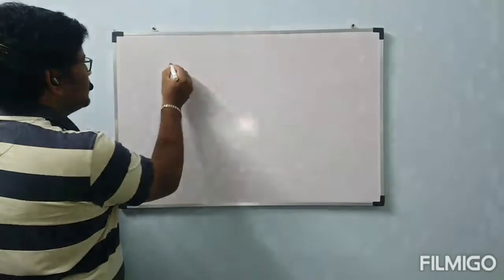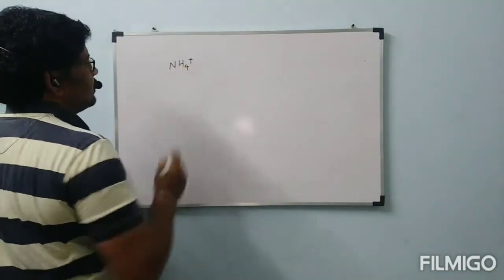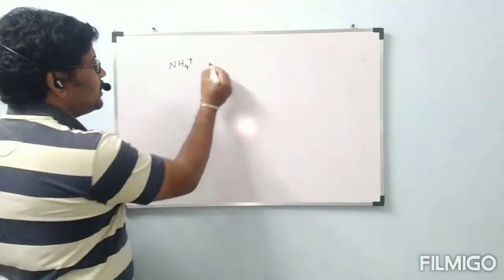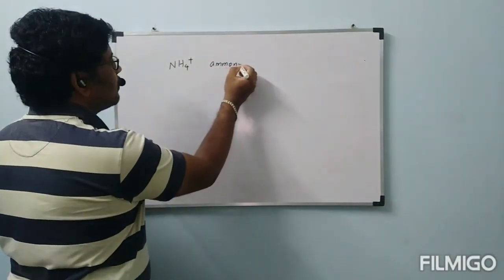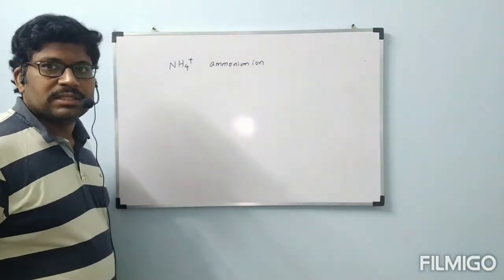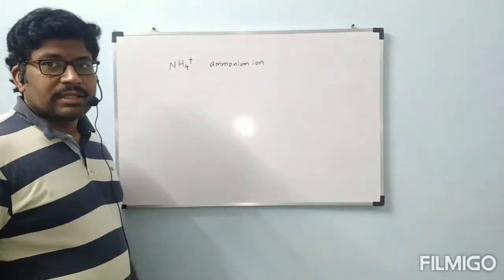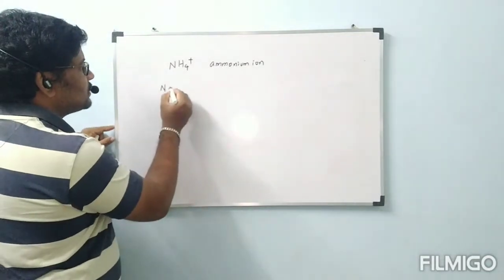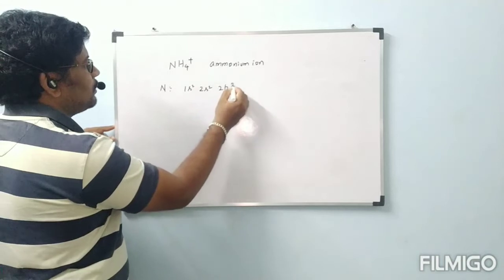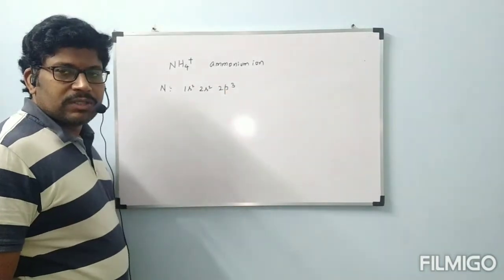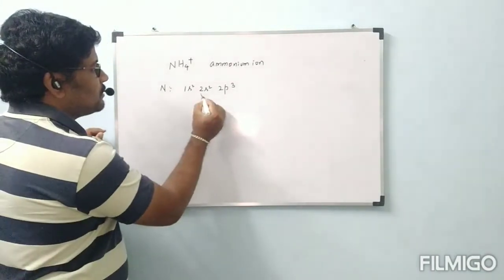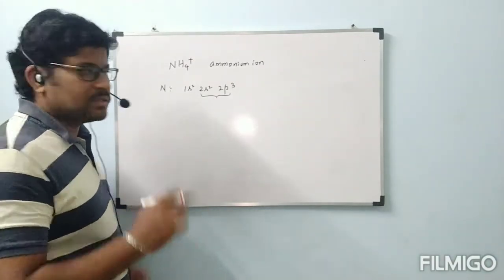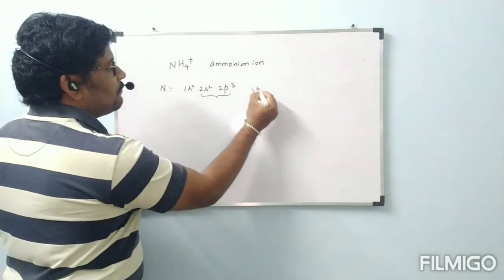Let us consider NH4+, called the ammonium ion. The central atom is nitrogen. Nitrogen's electronic configuration is 1s², 2s², 2p³. The outermost shell is the second shell, which has 5 electrons. So V is equal to 5.